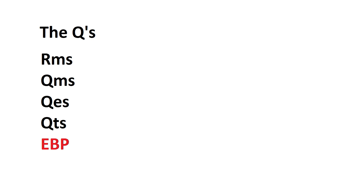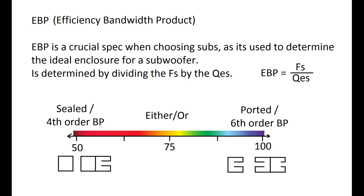The last parameter is EBP — efficiency bandwidth product — found by FS divided by QES. As shown on the graph, an EBP below 50 suits sealed or 4th-order enclosures; around 75 works for either; above 100 is better for ported or 6th-order bandpass enclosures. For example, FS = 25 with QES = 0.5 gives EBP = 50, ideal for sealed; FS = 50 with QES = 0.5 gives EBP = 100, better for ported.